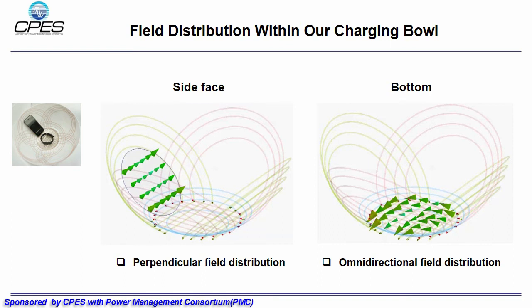Therefore, no matter how you place your small portable devices, we can always find one direction field, which is perpendicular to your devices. With this charging ball, you can simply drop your devices in the ball and get efficient charging.